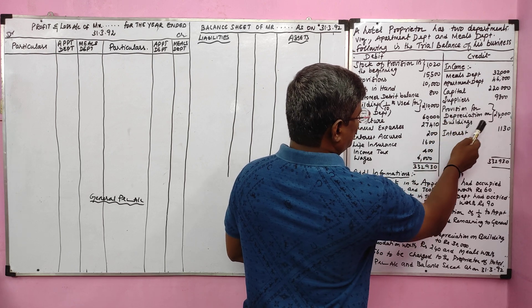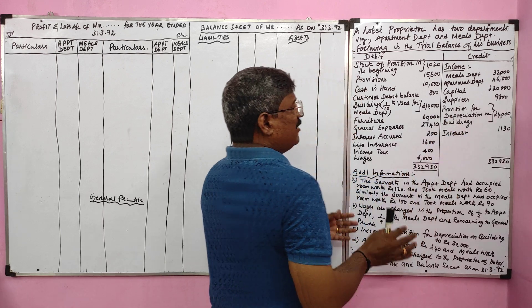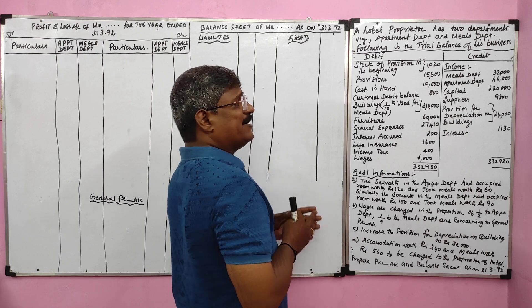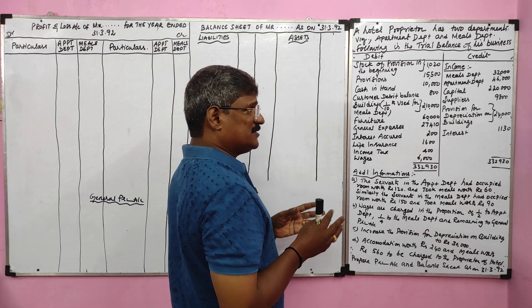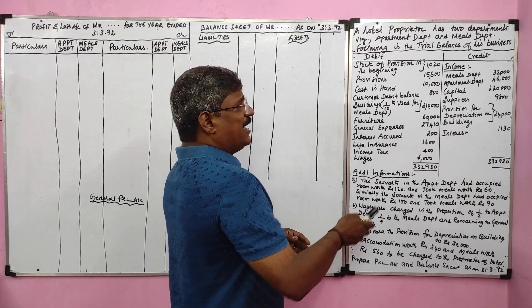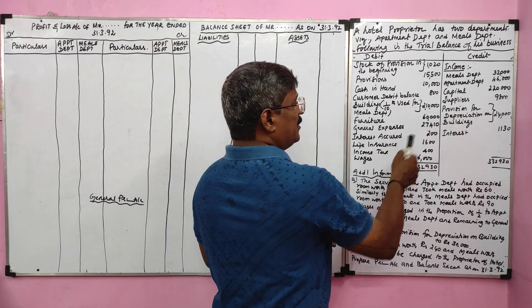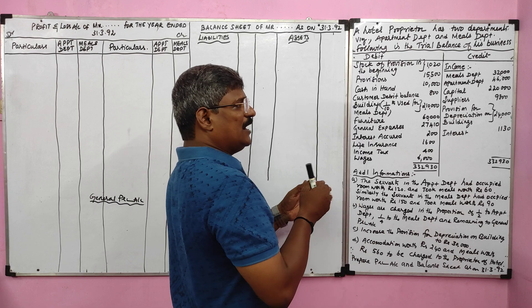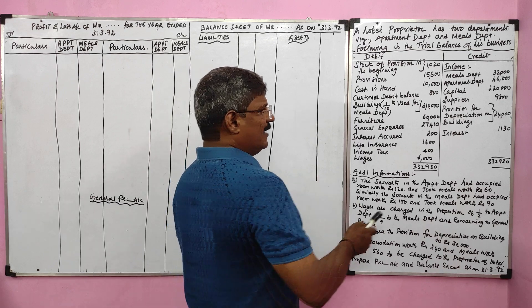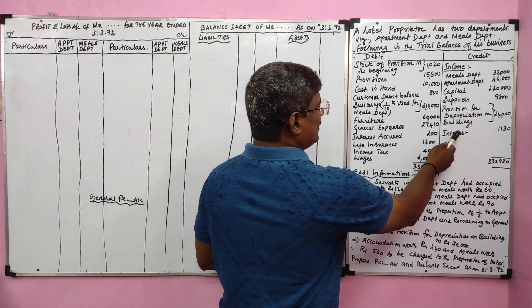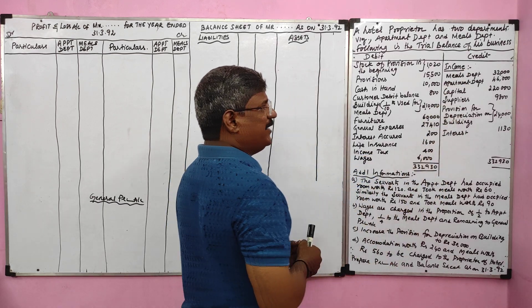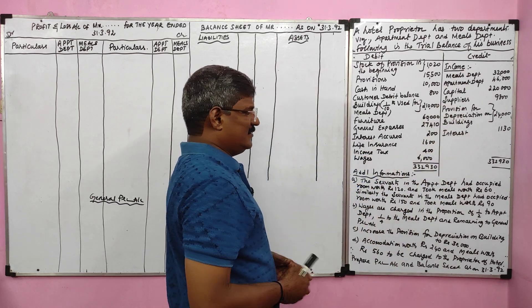Provision for depreciation on building is given in the trial balance, so it will go to the liability side of the balance sheet. If depreciation itself were given, it would be recorded on the debit side of the profit and loss account. Interest given on the credit side is considered to be interest received.